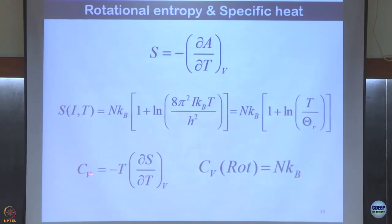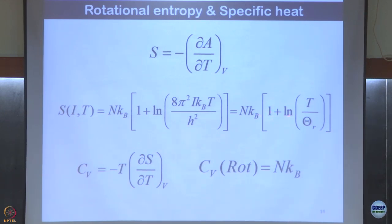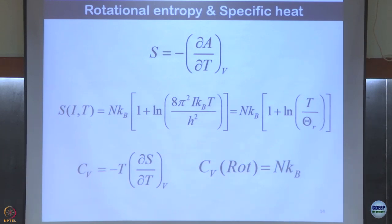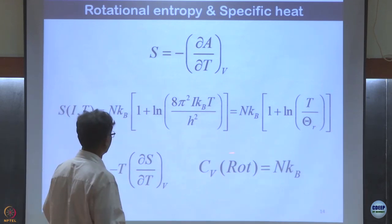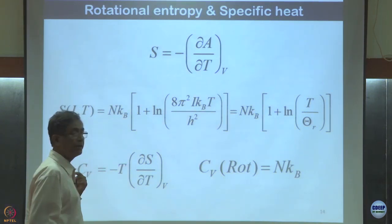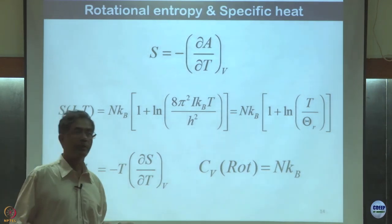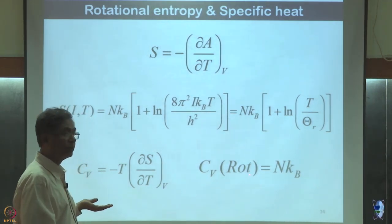Taking the derivative to get heat capacity: the ln(T/θ_r) term differentiates to give 1/T, which cancels with T, and we get that the rotational specific heat is Nk — or R per mole. This is exactly parallel to the translational result.